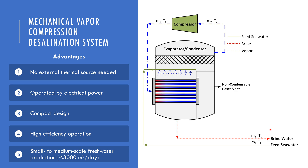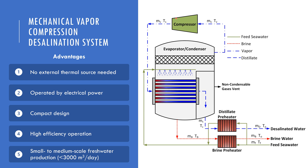Next, the formed vapor enters the compressor to increase its thermal energy by compressing it, and is directed back to the tube side of the evaporator. Due to its higher thermal energy from compression, the compressed vapor releases its heat back to the sprayed water falling outside, vaporizing it and causing the cycle to continue. Consequently, the compressed vapor will condense and is subsequently collected for post-processing and usage. To improve energy recovery, preheaters are installed for the distillate and brine to add thermal energy to the incoming feed streams, thereby improving performance.